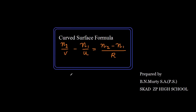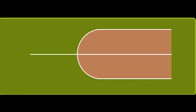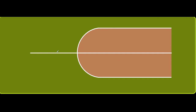The curved surface formula is n2/v minus n1/u equals (n2 minus n1)/r. Let us derive this. Here, this is the rarer medium and this is the denser medium. Let us assume the object is here — this is the object O and the light ray is traveling like this. This is the incident ray, incident at point A. When the light ray travels from the rarer medium to the denser medium, it undergoes refraction.